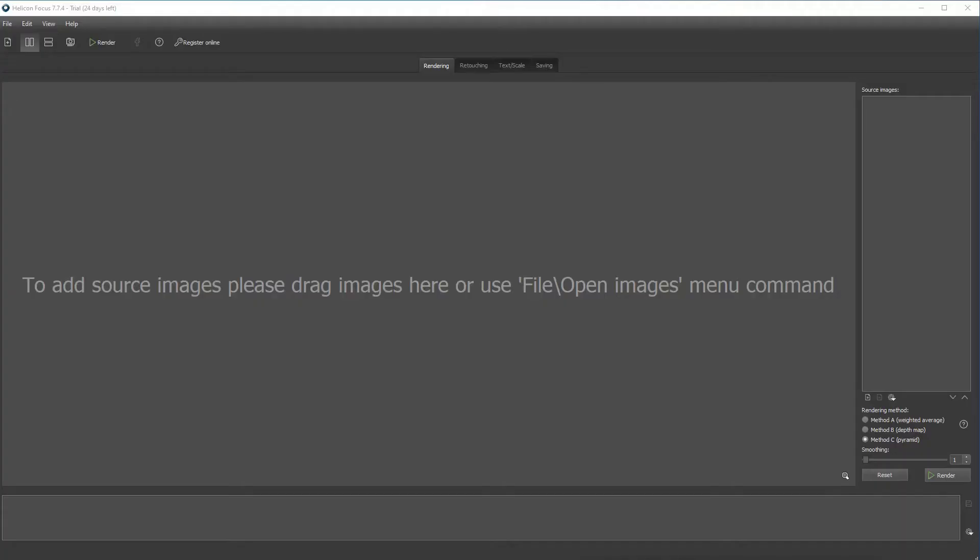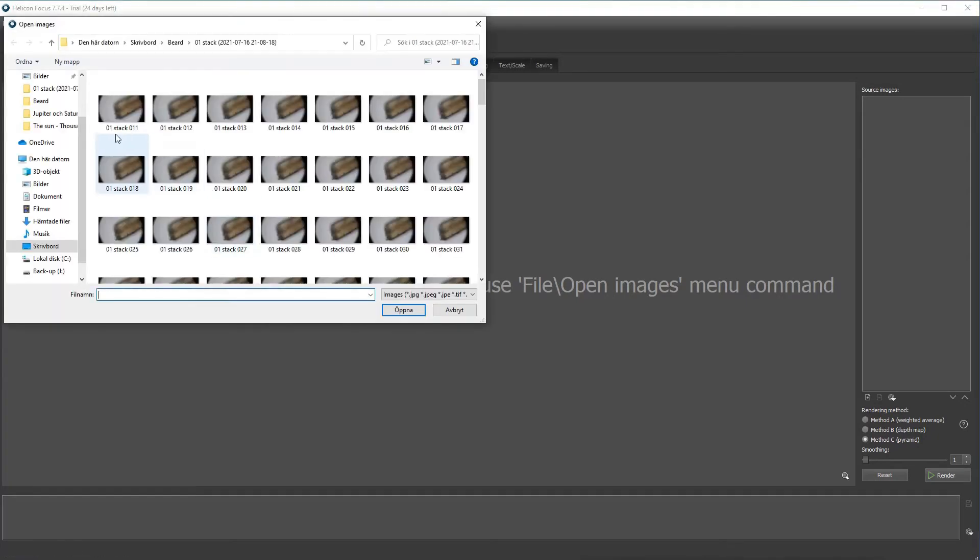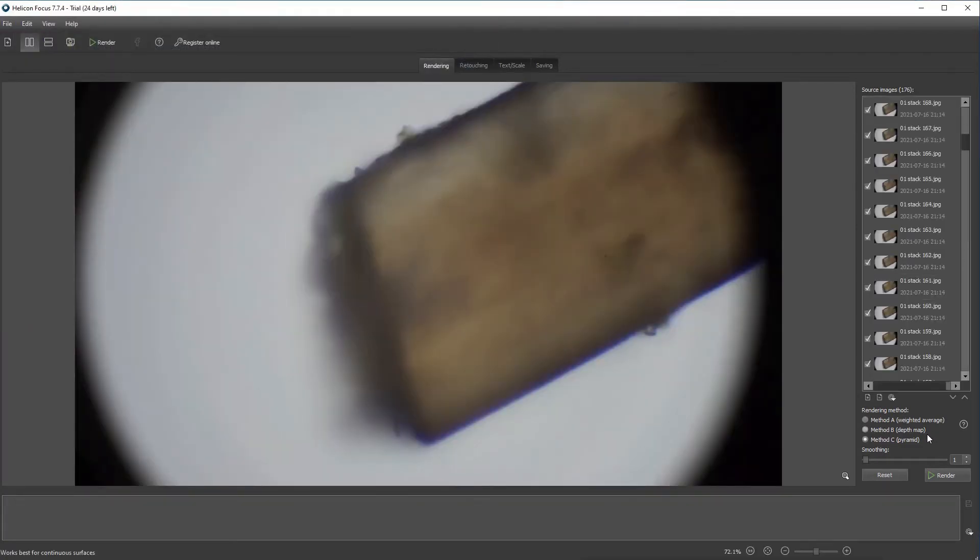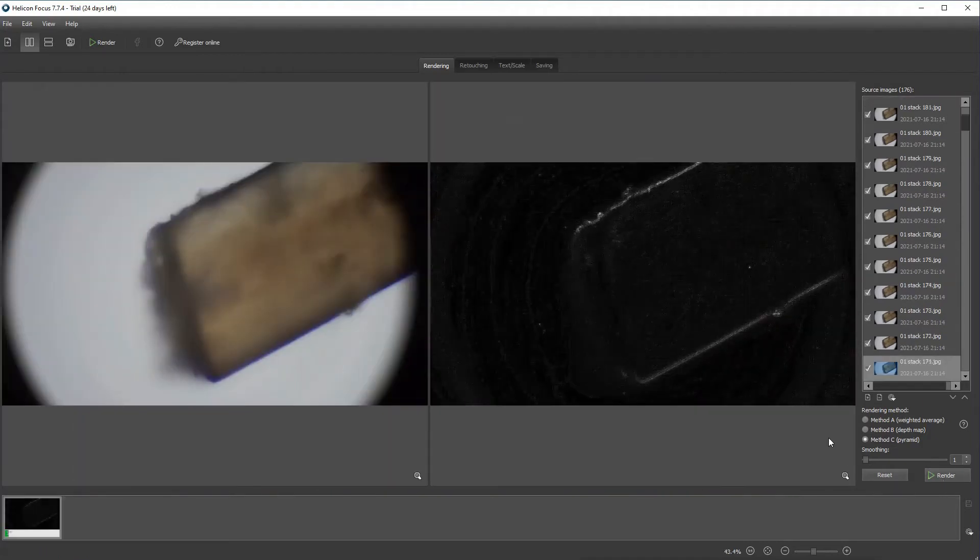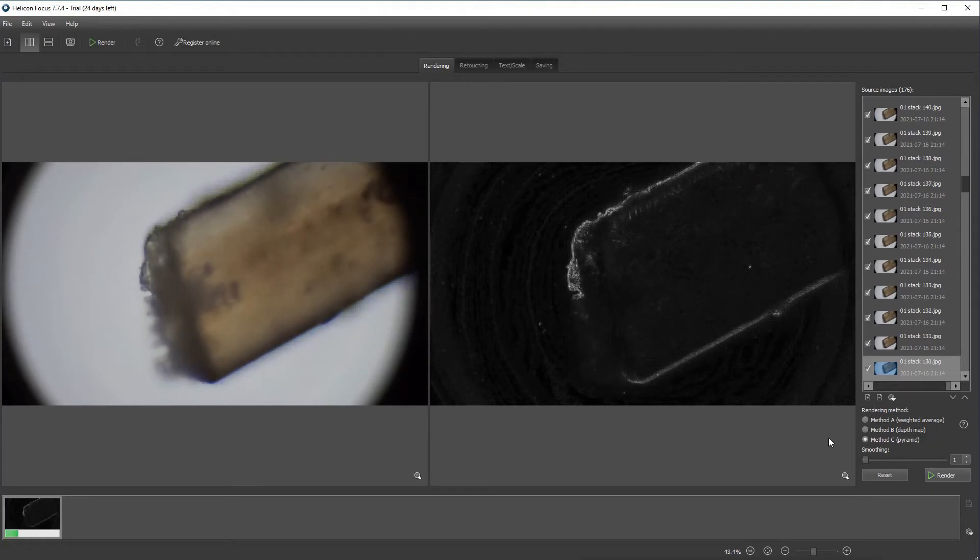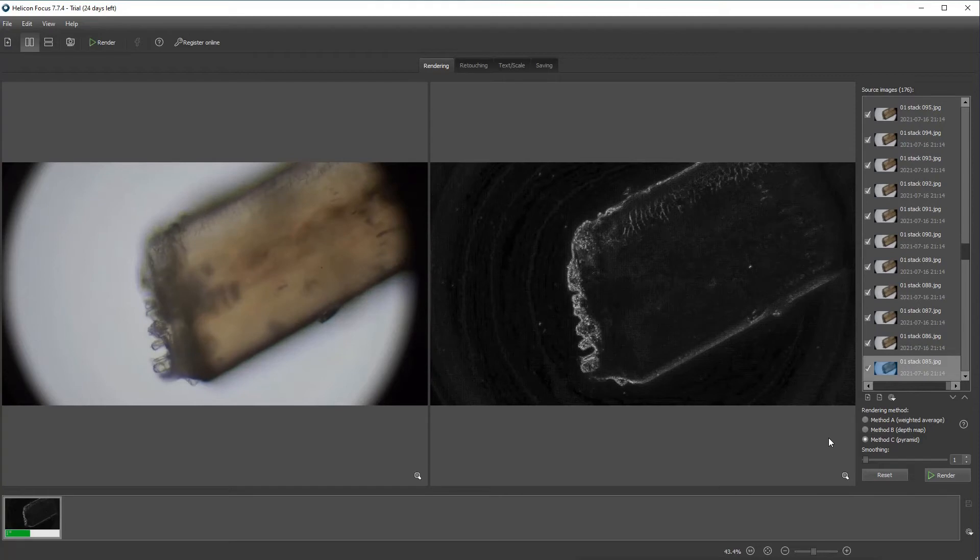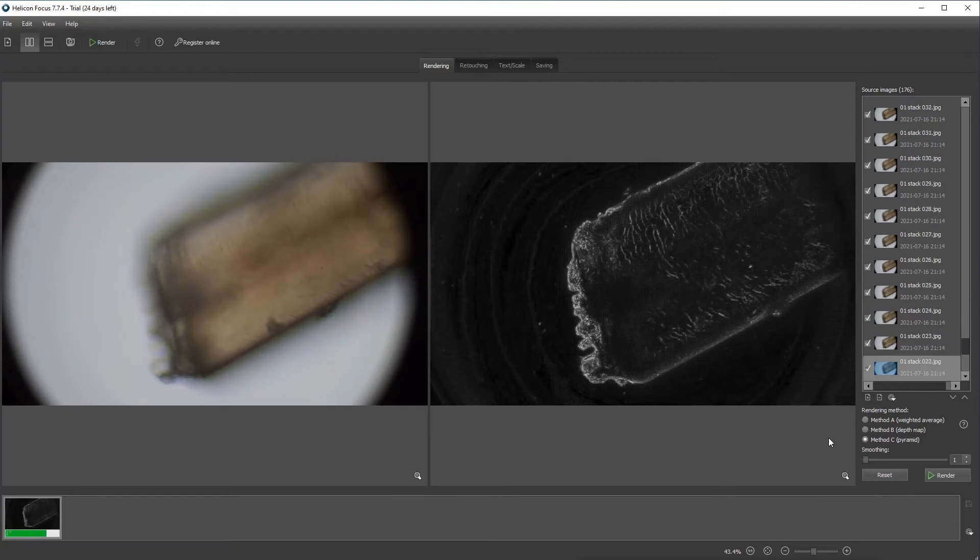And next step is to use the Helicon Focus 7 to stack the images. So I start opening all the pictures that I extracted from the video. I choose this setting, pyramid something, because it explains that it's for deep stacking and I think I have quite a lot of images. So I hope this one is the best one. If you have some tips just comment. Here we can see the program working. It looks up the sharpest point in all the images and combines them to one sharp image in the end hopefully.